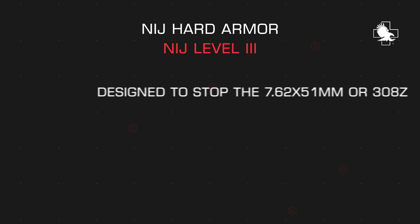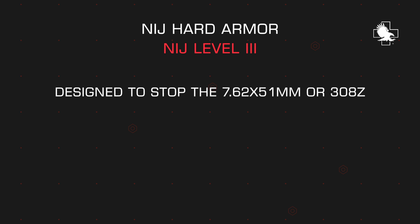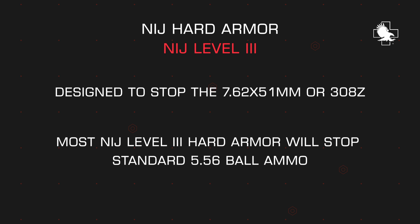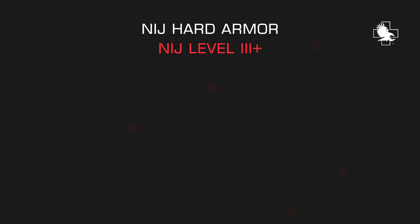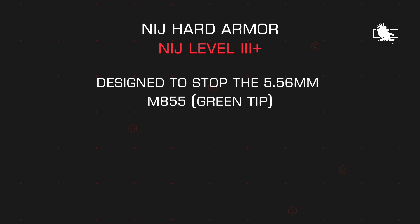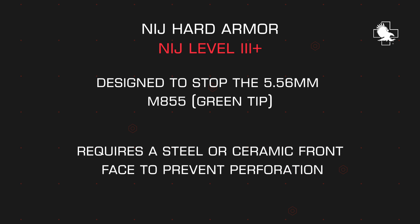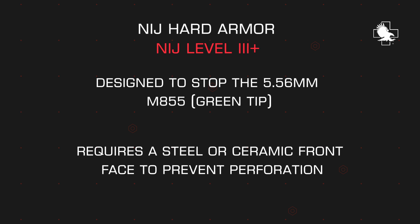Level 3 Hard Armor is designed to stop the 7.62x51mm, or .308. Most, but not all, Level 3 Hard Armor on the market will also stop standard 5.56mm ball ammunition. The so-called Level 3 Plus rating is generally meant to address the 5.56mm M855 round — commonly referred to as the green tip — which requires a steel or ceramic front face to prevent perforation. An NIJ Level 4 plate is designed to stop a true .30 caliber round or .30-06 round, which is very uncommon.